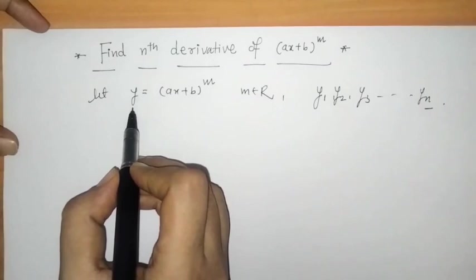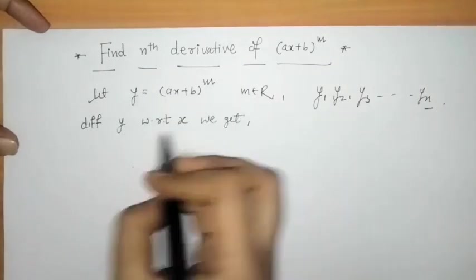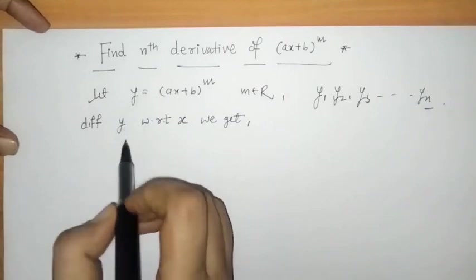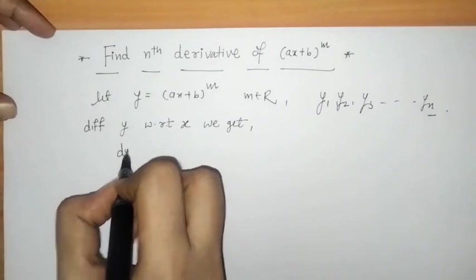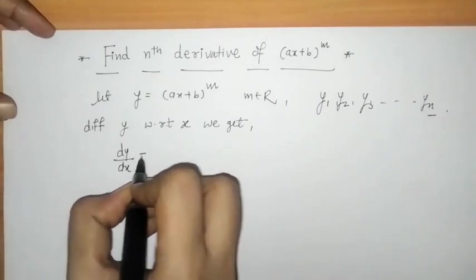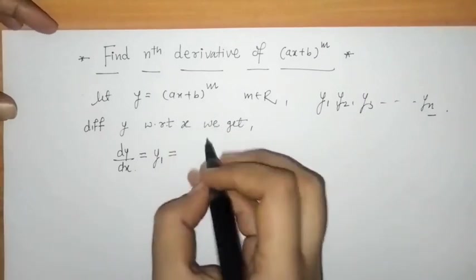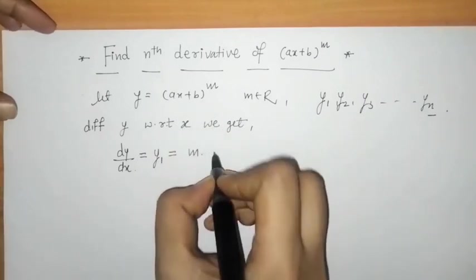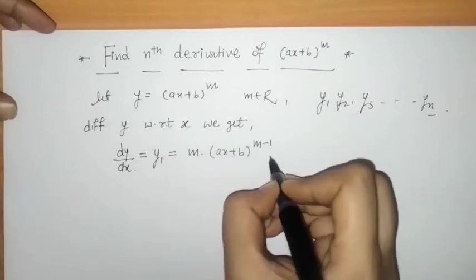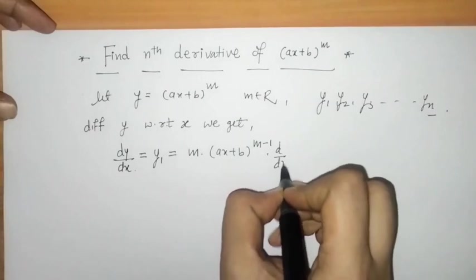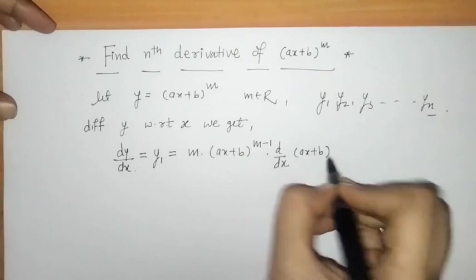Let's differentiate y with respect to x. Differentiating y with respect to x, we get the first derivative dy/dx, which we call y1. This is given by m into (ax + b) raised to (m − 1), into the derivative of the inner function (ax + b).